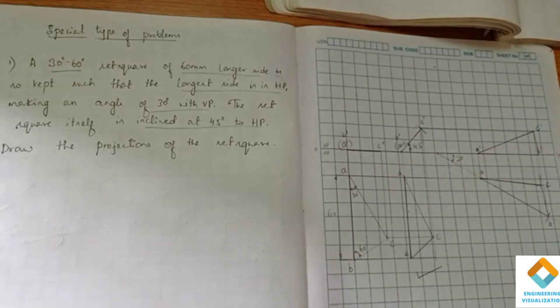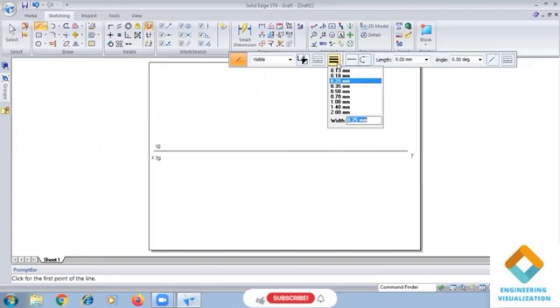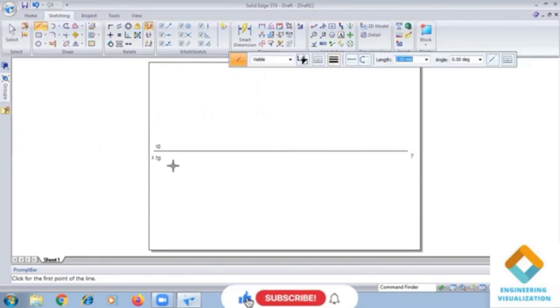That's the completed problem. Welcome to Engineering Visualization channel. Today we are going to do a special type of problem, that is 30 degree, 60 degree set square. For this problem, first draw a line of length 60 mm and draw angle lines here like this.